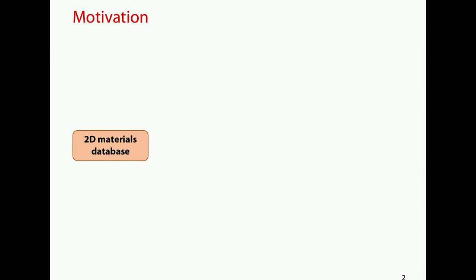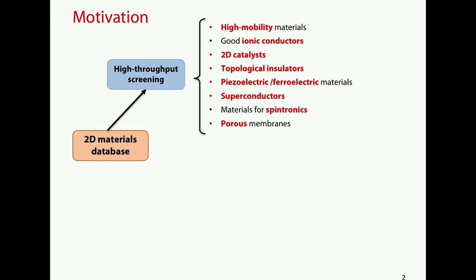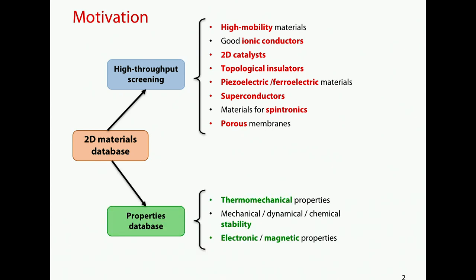If we imagine we have a 2D materials database with a number of quantities inside, we could think of doing high-throughput screening — looking for high mobility materials, ionic conductors, catalysts, topological insulators, piezoelectric, ferroelectric materials, superconductors, spintronics materials, or porous membranes. Some of those we are already beginning to do in the lab; others are the state of the project. You could also build a property database with quantities like thermo-mechanical properties, stability, or electronic and magnetic properties, and this in itself has a big value.